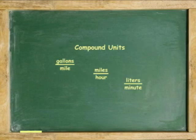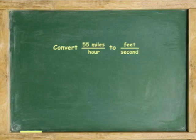Now let's try converting compound units. A compound unit has more than one unit. For example, speed in miles per hour is a compound unit because it contains miles and hours. Compound units may also be converted using dimensional analysis by converting one unit at a time.